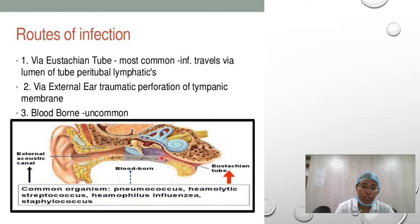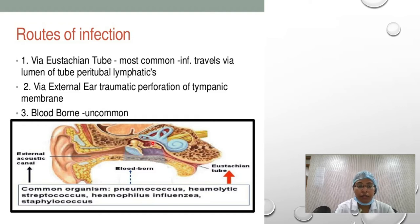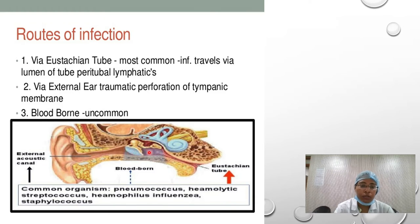There are three routes of spread of infection. The first and most common is through the eustachian tube. The second is through the external ear — if there is damage to the tympanic membrane, infection can spread from outside into the middle ear; if not treated, this can become chronic otitis media. The third and least common route is hematogenous spread, where a systemic infection spreads to the middle ear through the blood vessels.